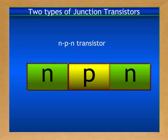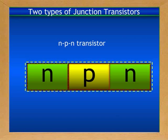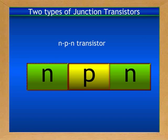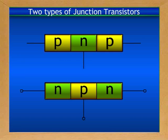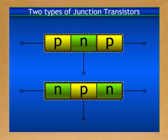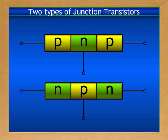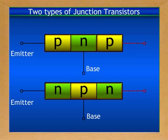In an NPN transistor, the addition of one n-type semiconductor to the left of the p-type semiconductor gives a device with three extrinsic semiconductors in the order of N-P-N, as shown in the slide. This device is called the NPN transistor. A transistor is provided with three terminals on each of the three extrinsic semiconductors for use in electronic circuits.